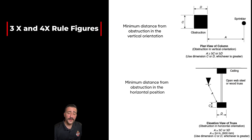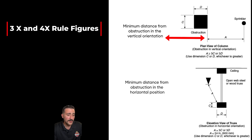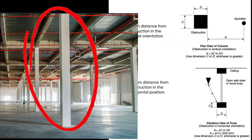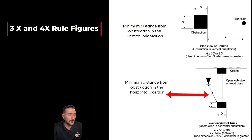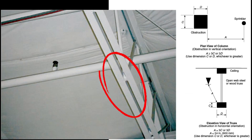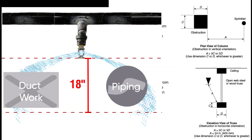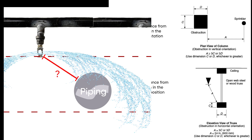Here are the figures for the three and the four times rule. At the top you can see the minimum distance from obstructions in the vertical orientation — for example, a column. At the bottom you can see the minimum distance from obstructions in the horizontal position; NFPA uses an open web truss as their example. Other examples of obstructions in the horizontal position could be piping, conduit, ductwork, and lighting. The three and the four times rule gives us the distance we need to be from the obstruction when our head is within the discharge pattern development zone.